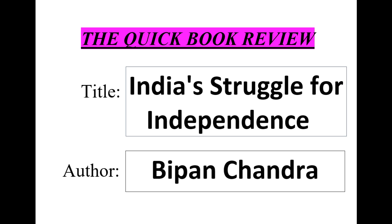The book delves into the different phases of the independence movement, including the early struggle for constitutional reforms, the non-cooperation movement, the civil disobedience movement, and the quit India movement. The author also provides an in-depth examination of the partition of India, which led to the creation of independent India and Pakistan.